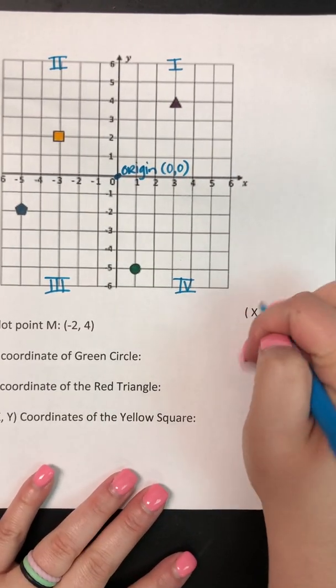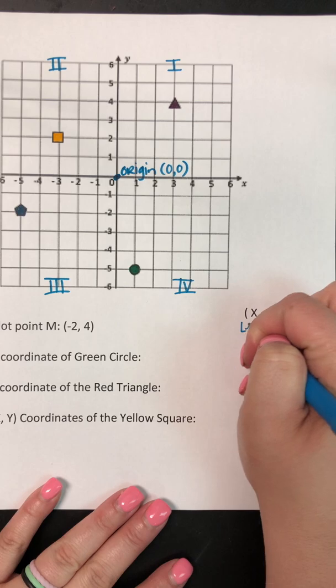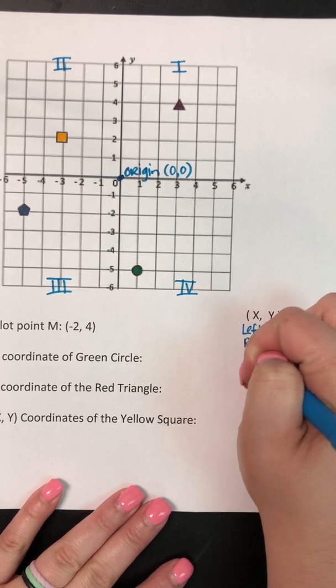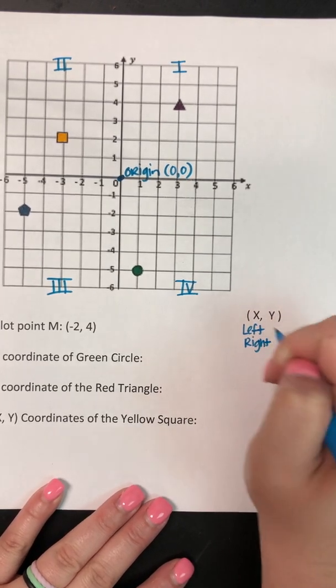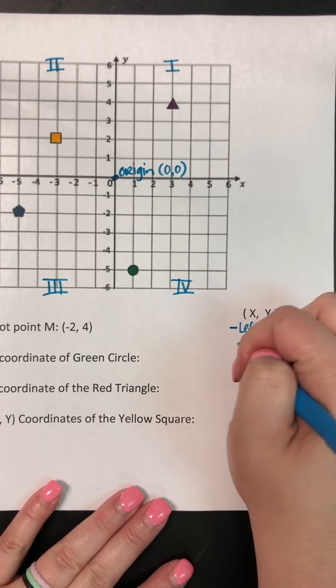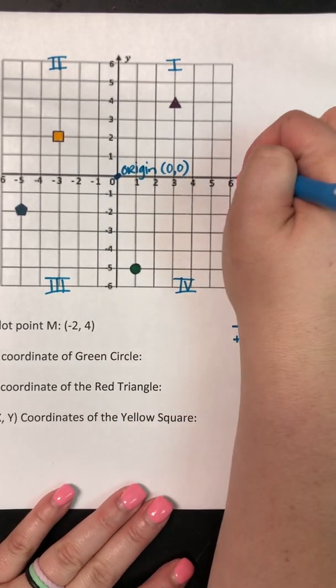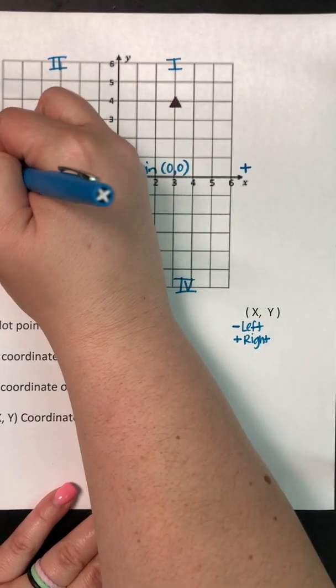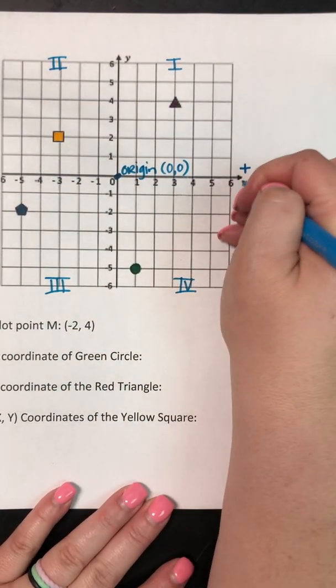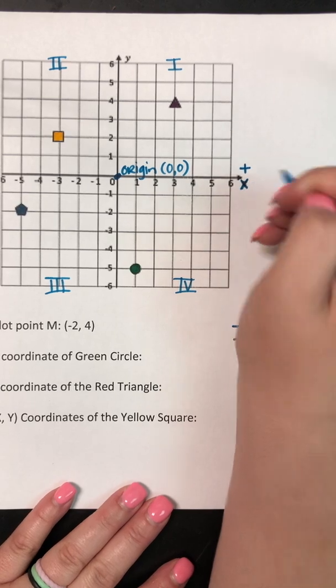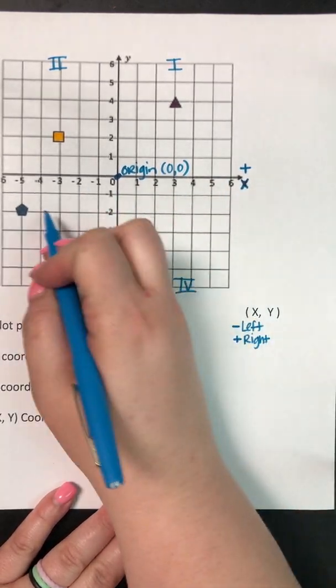So again your x coordinate is going to be left or right and if you go to the left it's negative and if you go to the right it's positive. So just like a number line, this right side is positive, the left side is negative and again this is the x-axis so those numbers will move left or right.